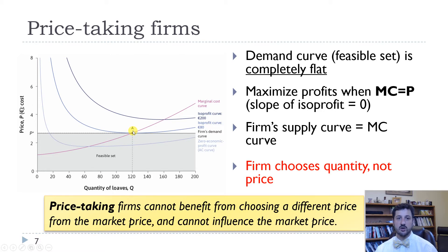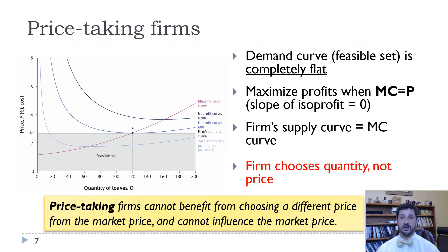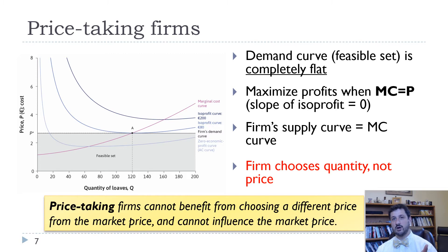In the short term, firms could be earning some positive profits. But it's important to remember that accounting profits and economic profits are different. Economic profits take into account all of the opportunity costs that the firm could use their capital for instead of whatever they are doing — in this case, baking bread. We'll see later in this chapter that if a market is earning positive economic profits, firms will enter the market and we would expect those economic profits to fall to zero.